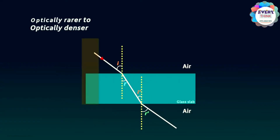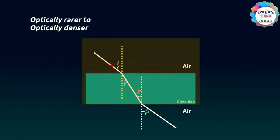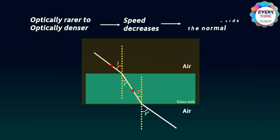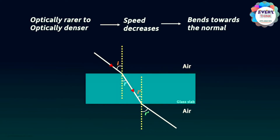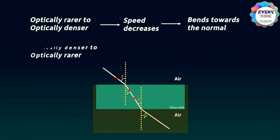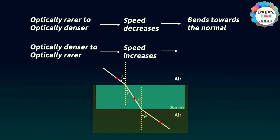When light is travelling from an optically rarer medium to an optically denser medium, its speed will decrease and it will bend towards the normal. Whereas when light is travelling from an optically denser medium to an optically rarer medium, its speed will increase and it will bend away from the normal.